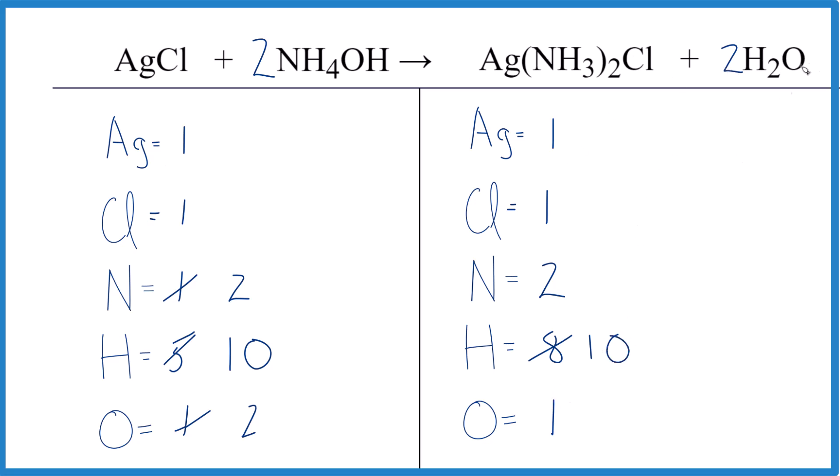And then oxygens, 2 times the 1, that is 2. And we're done. And this is actually a lot easier than I thought it would be. But that's how you do it. That's how you balance the equation AgCl plus NH4OH.